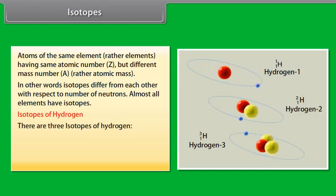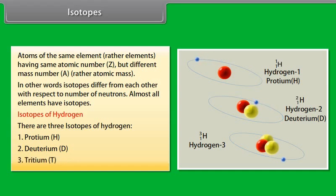Isotopes of hydrogen. There are three isotopes of hydrogen: Protium, Deuterium, and Tritium.